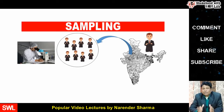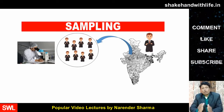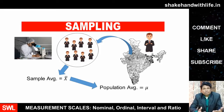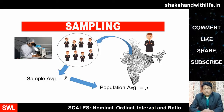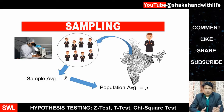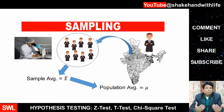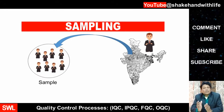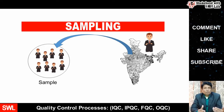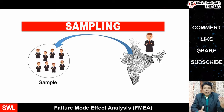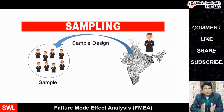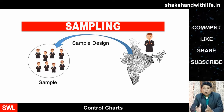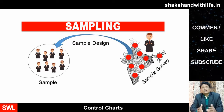The researcher often selects only a few items from the universe or population for his study. All this is done on the assumption that the sample data — such as the sample mean, given by x-bar — will enable him to estimate the population parameter, such as the population mean, given by mu. Hence, the group of items so selected is technically called a sample, and the selection process or technique through which the researcher selects the items of the sample is called sample design. The survey conducted on the basis of a sample is described as a sample survey.